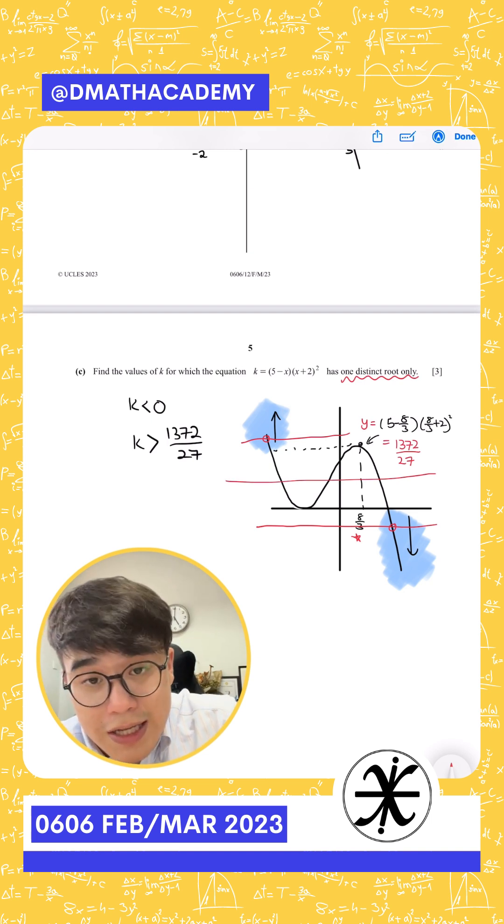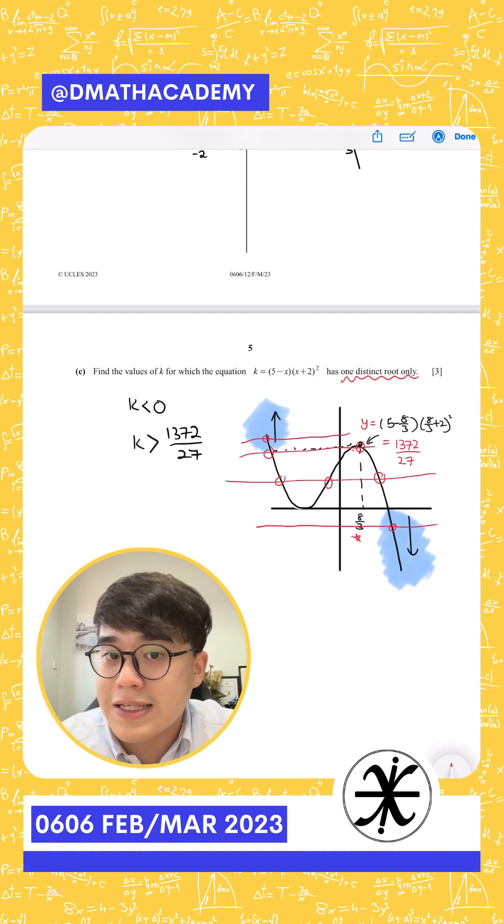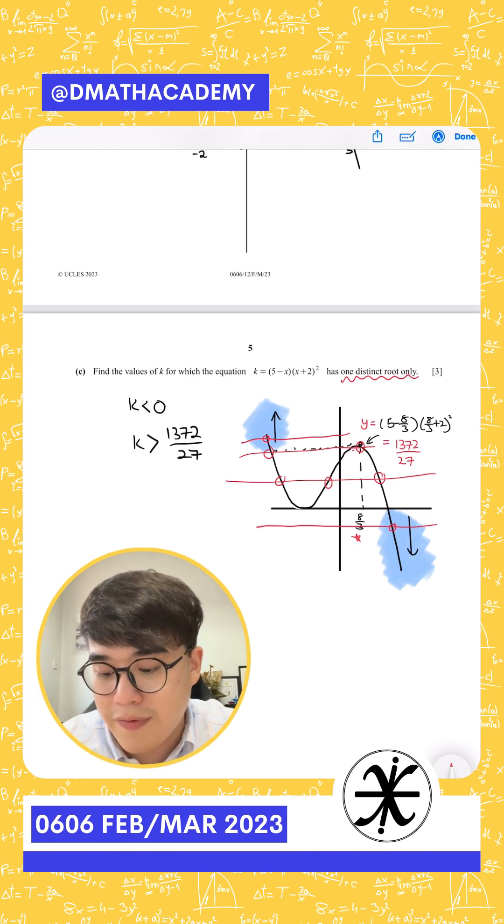So if you draw anything in between, you ended up with 3 or 2 intersections. So this is the reason why the answer turns out to be k lesser than 0, and also k more than 1372 over 27.